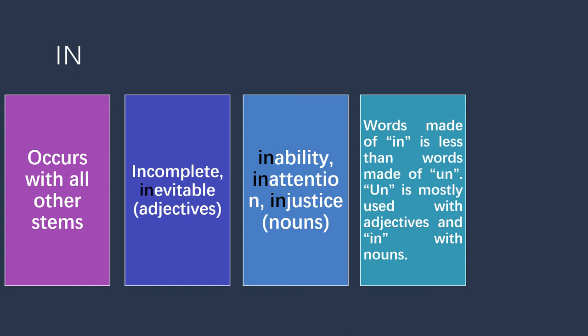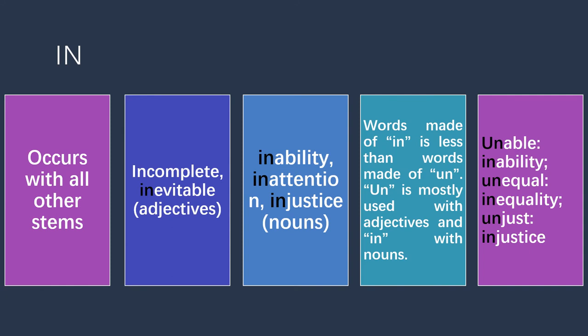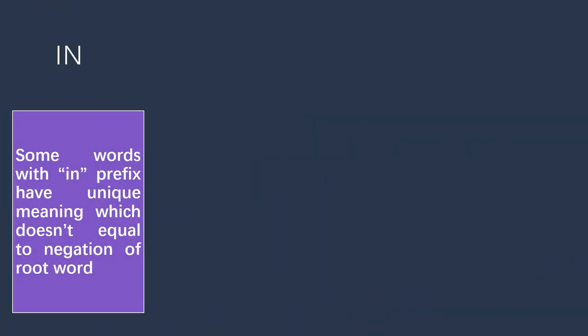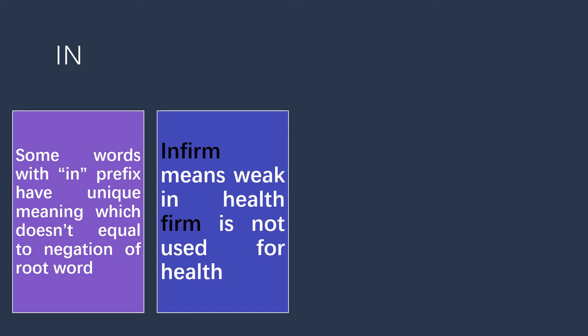We get a similar meaning by adding 'in' or 'un' as a prefix, but words made with 'in' are fewer than those made with 'un.' The prefix 'un' is mostly used with adjectives, whereas 'in' is mostly used with nouns. For example, 'unable' is used before an adjective, while 'inability' is a noun. Similarly, 'unequal' is an adjective and 'inequality' is a noun; 'unjust' is an adjective and 'injustice' is a noun.